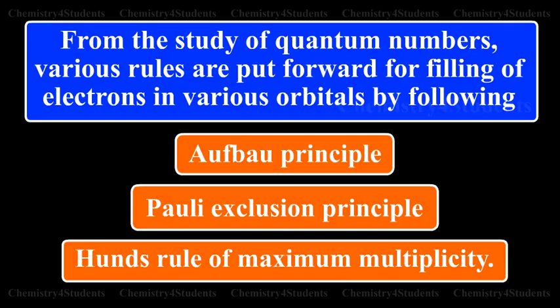From the study of quantum numbers, various rules are put forward for filling up of electrons in various orbitals by following Aufbau principle, Pauli exclusion principle and Hund's rule of maximum multiplicity.